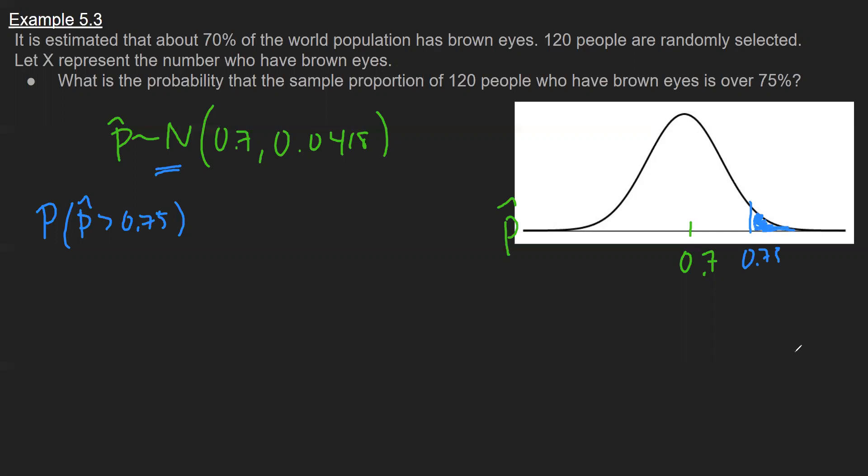Just like all of our other normal distribution problems, our goal here is to standardize this to a z-score. The z-score is always the value that you're trying to standardize. For us, it's 0.75. We're going to subtract the mean of your bell curve, which is 0.7, and divide by the standard deviation, which we calculated earlier, the 0.0418. Putting that all together, let me punch it into my calculator. Rounding to two places, I get 1.20.